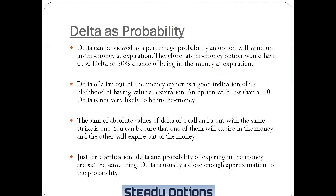Many traders sell far out of the money options, getting a probability of success of 90% or more, meaning a 90% chance that the options will expire worthless. The sum of absolute values of Delta of a call and put with the same strike is 1 — you can be sure that one of them will expire in the money and the other will expire out of the money. Just for clarification, Delta and probability of expiring in the money are not the same thing. Delta is usually a close enough approximation to the probability — not the same thing, but pretty close.